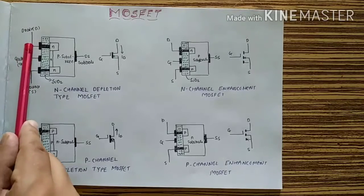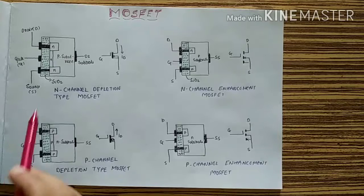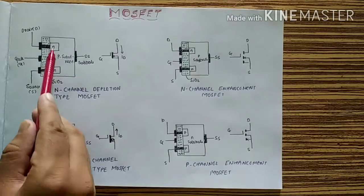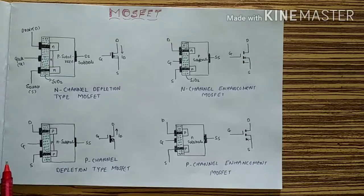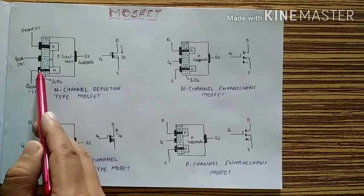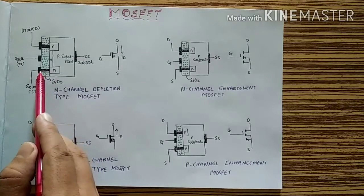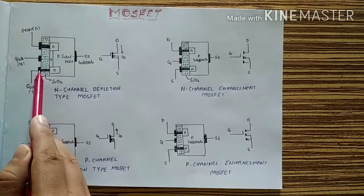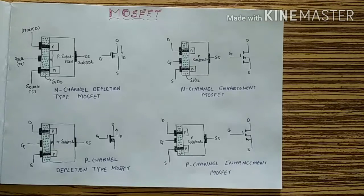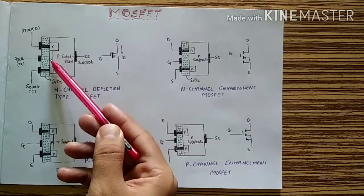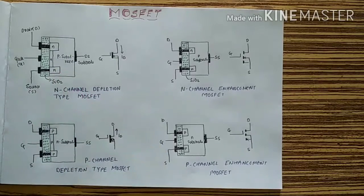You can see that drain and source are in metallic contact with N-type. There is a direct metallic contact with N-type for drain and source. You can see in the diagram that the N-type is in direct contact with both N-type regions for drain and source.